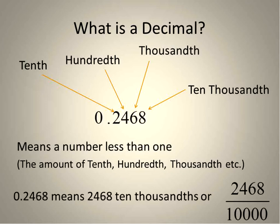The number we have here, 0.2468, means 2,468 ten thousandths, or 2,468 out of 10,000. That's a fraction—we just learned about those.